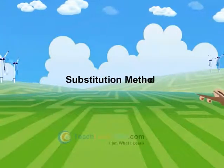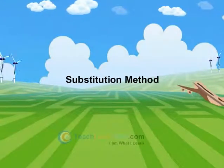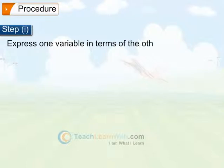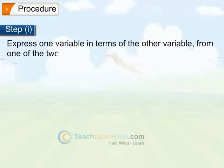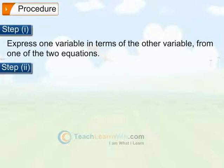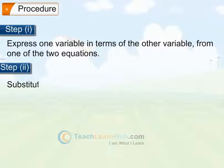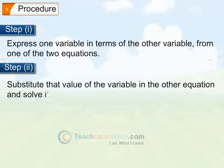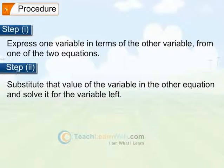Substitution method. Procedure: Step 1 - Express one variable in terms of the other variable from one of the two equations. Step 2 - Substitute that value of the variable in the other equation and solve it for the variable left.